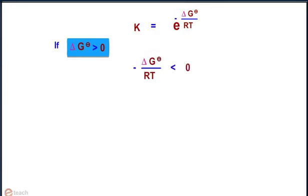If delta G° is greater than zero, minus delta G° upon RT is less than zero. This implies that e to the power minus delta G° upon RT is less than 1, which further implies that K is less than 1.